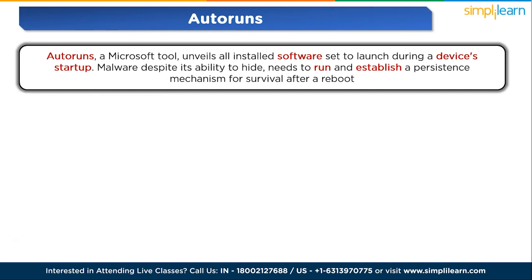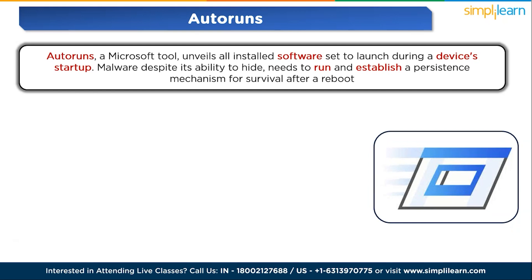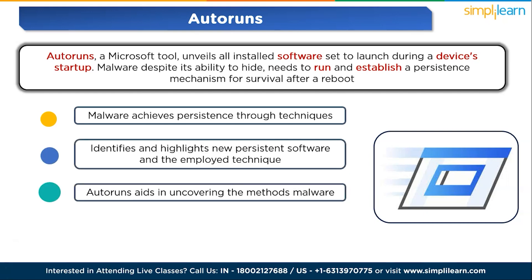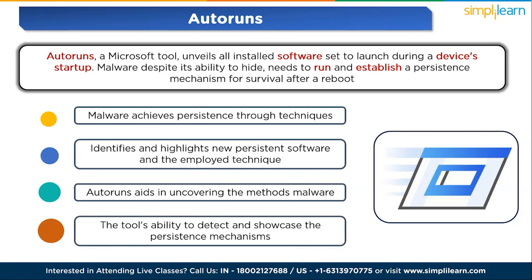The fifth tool is Autoruns. Autoruns is a Microsoft tool that unveils all installed software set to launch during device startup. Malware, despite its ability to hide, needs to run and establish a persistent mechanism for survival after a reboot. Malware achieves persistence through techniques like creating scheduled tasks or specific run keys within the registry. When run in a virtual machine after malware execution, Autoruns identifies and highlights new persistent software and the employed technique, making it invaluable for malware analysis. It aids in uncovering the methods malware uses to maintain a foothold on a system.